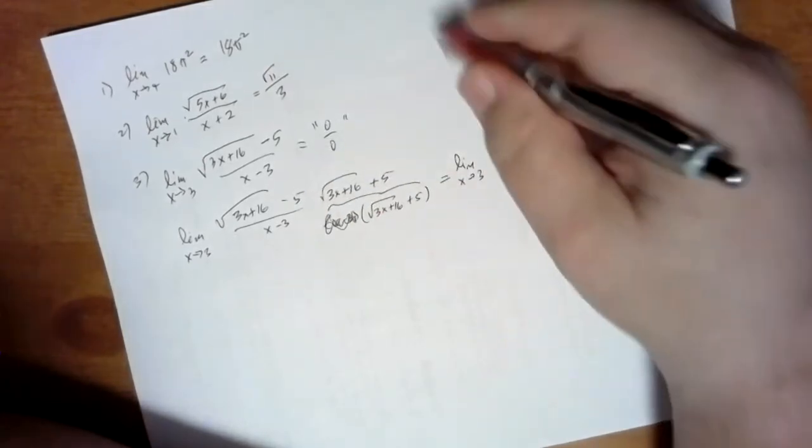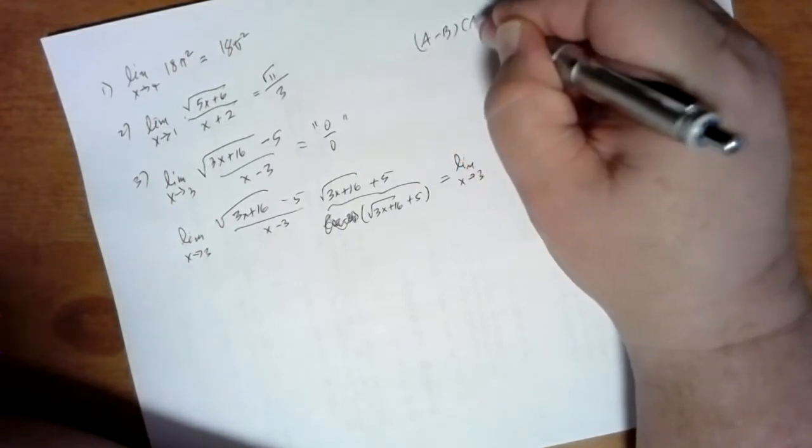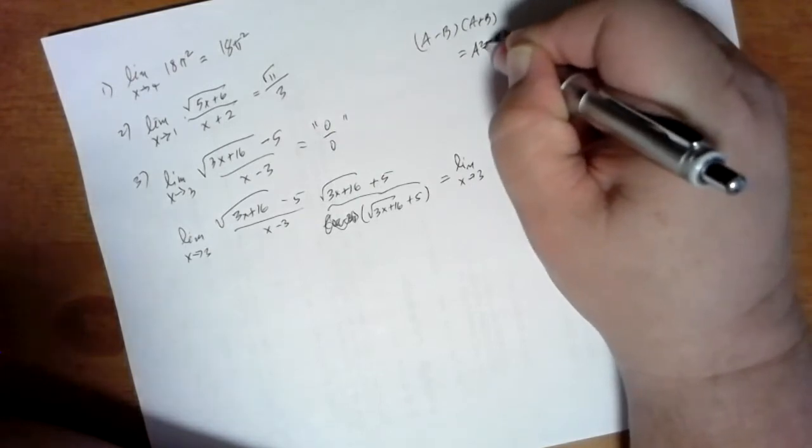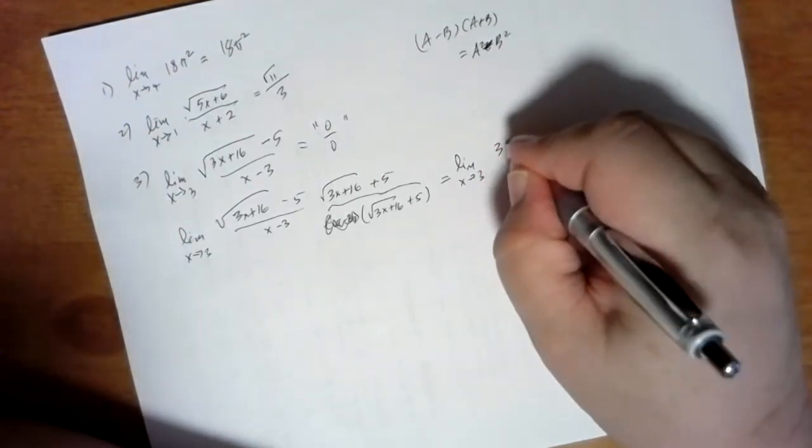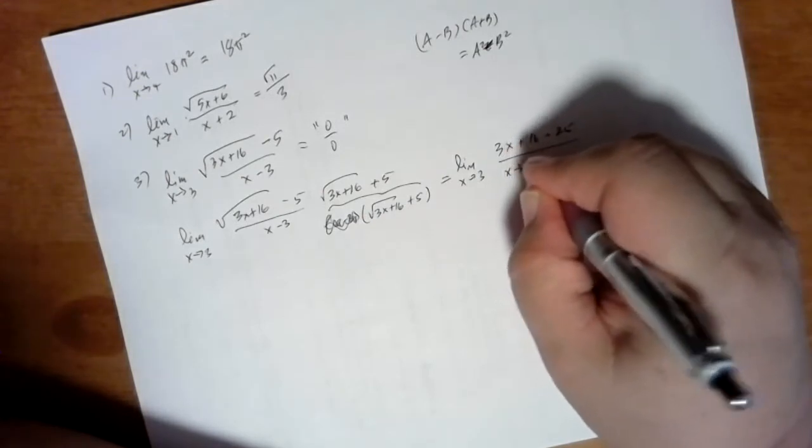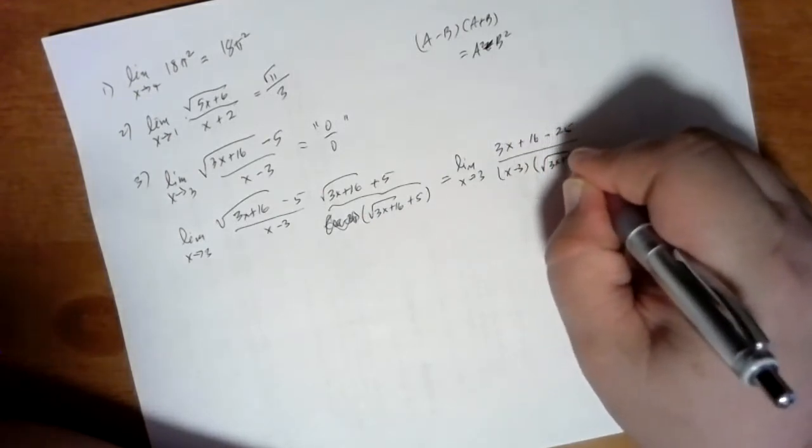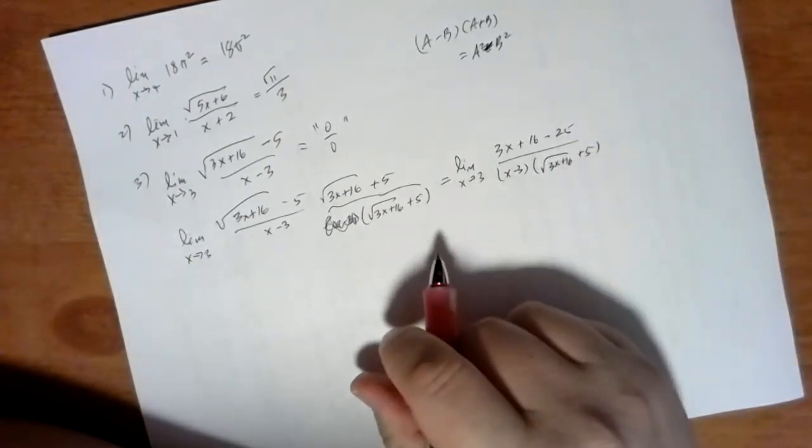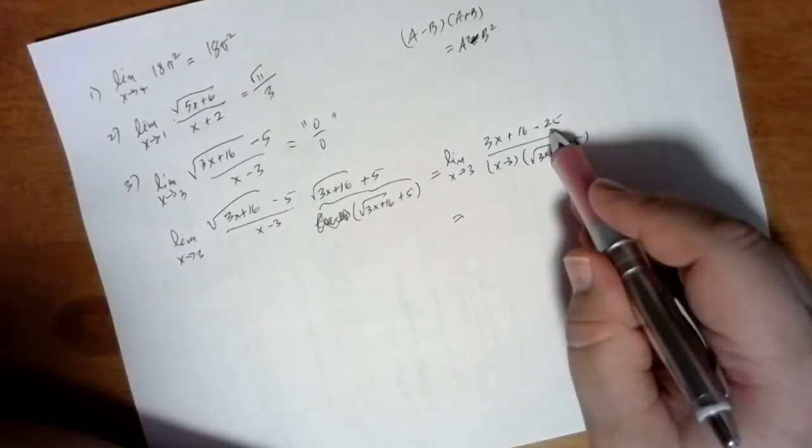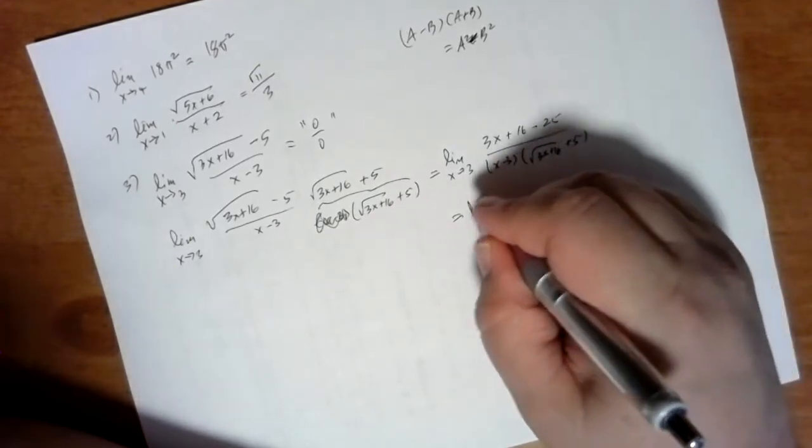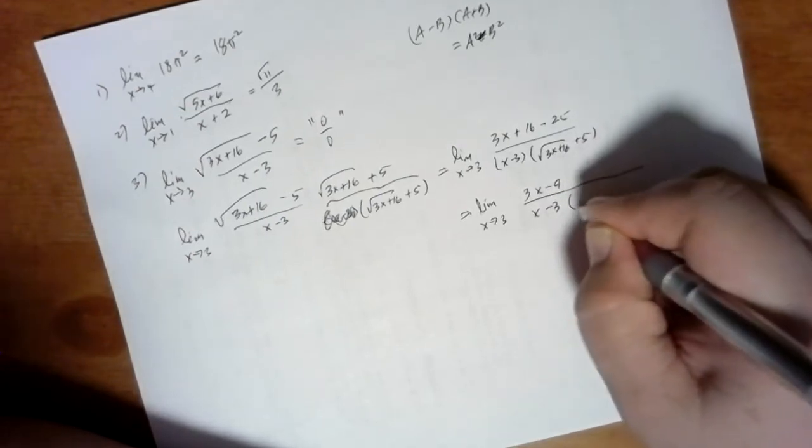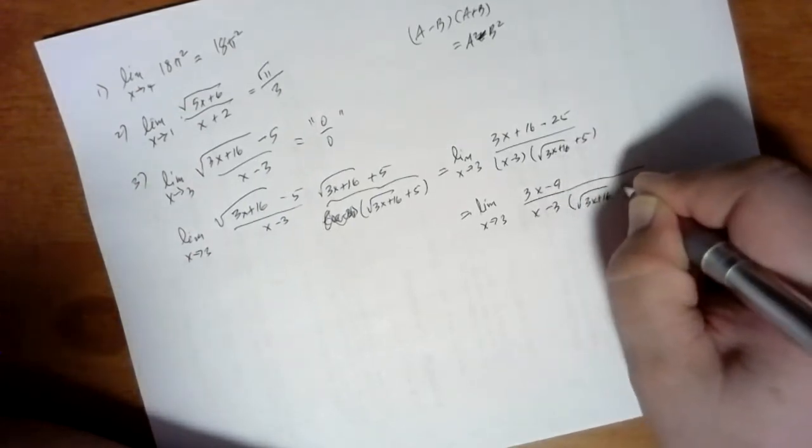So the numerator, remember, is going to be that a minus b times a plus b equals a squared minus b squared. So that's going to be 3x plus 16 minus 25 divided by x minus 3 times the square root of 3x plus 16 plus 5. And I think, let's see, what's 16 minus 25? That's minus 9. So 3x minus 9 divided by x minus 3 times the square root of 3x plus 16 plus 5.